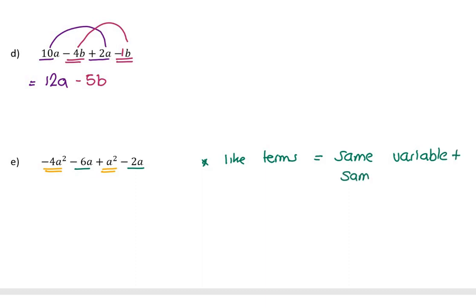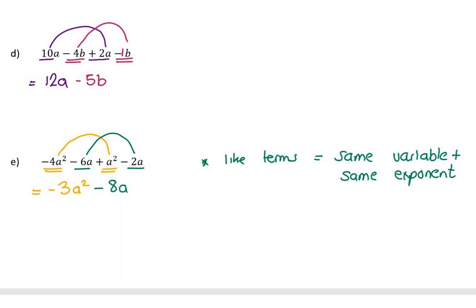So a's are not like terms with a squareds — a squareds are only like terms with other a squareds. In this case, −4a² + 1a² is −3a². And then −6a − 2a is −8a. Notice the a terms stayed as a, and the a squared terms stayed as a squared. You just have to keep concentrating because sometimes we get tempted to introduce exponents and start making things a to the power of 4. I can't combine those two because while they have the same variables, they do not have the same exponents, so they're not like terms.